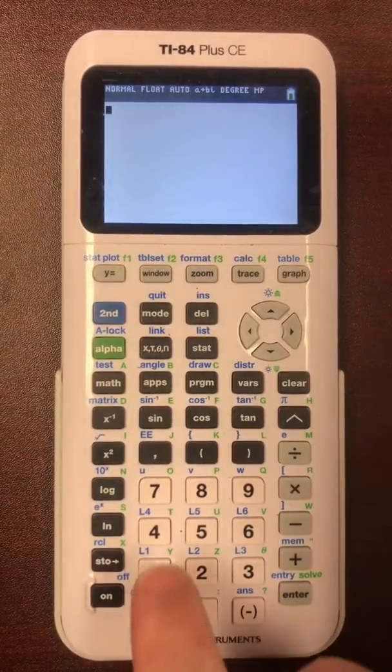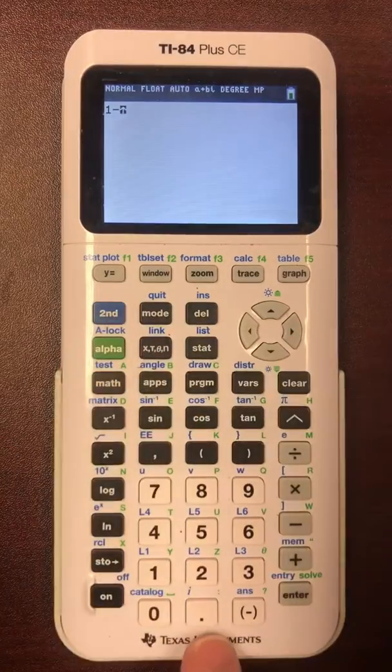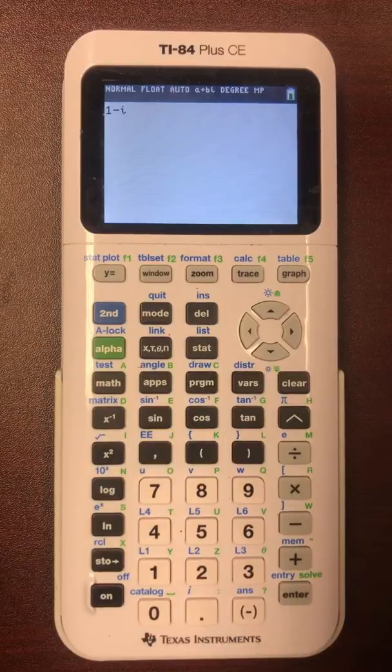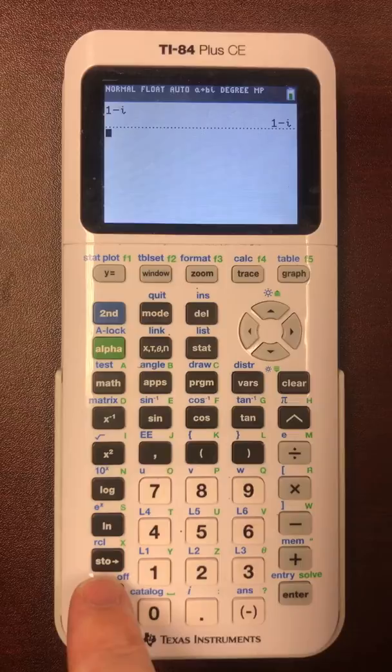So what we can do is type in 1 minus. Now you can hit second and then the decimal point down here to make it say I. Then there's this button down here, stow, on the bottom left.